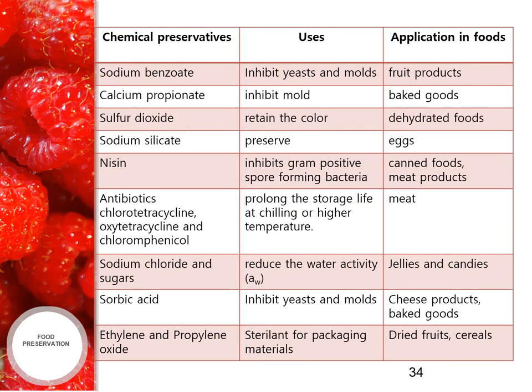Different types of chemical preservatives and their uses in food industries: sodium benzoate is used to inhibit yeast and molds and can be applied in food products; calcium propionate inhibits mold and is used for baked goods; sulfur dioxide is used to retain color and is used in dehydrated foods; sodium silicate is used to preserve eggs; and nisin inhibits gram-positive spore-forming bacteria.